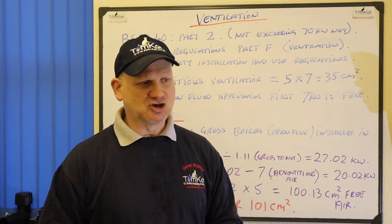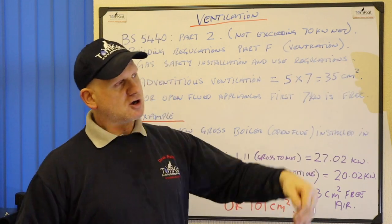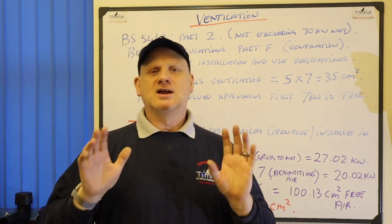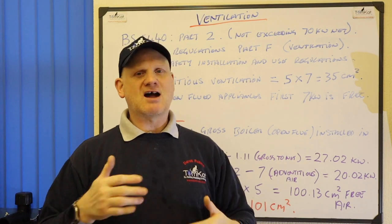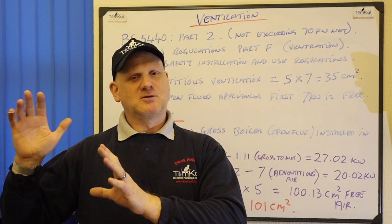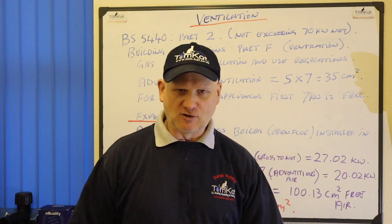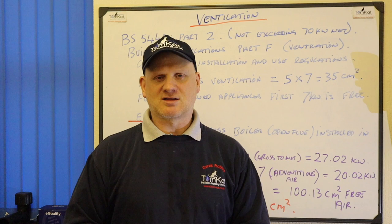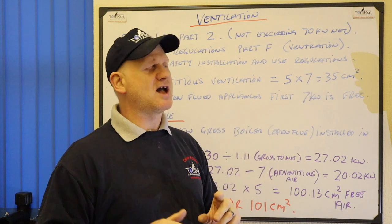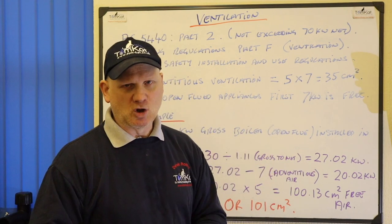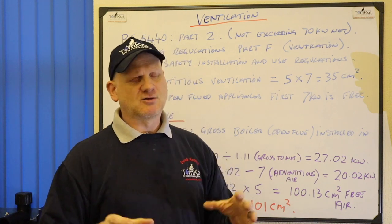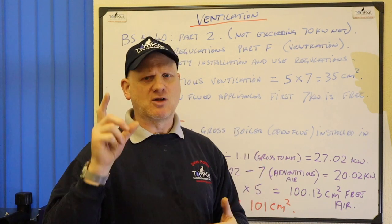Well, basically adventitious ventilation is the free air we've got in a room coming through the windows, doors, and floors. In houses built before 2008 we could have up to 7 kilowatts of free air in there. After 2008, because of double glazing, loft insulation, and floor insulation, we can't take this adventitious ventilation. To calculate it, we need 5cm² of free air per kilowatt over that 7kW. So 5 times 7 is 35cm² — adventitious ventilation actually comes out of 35cm².